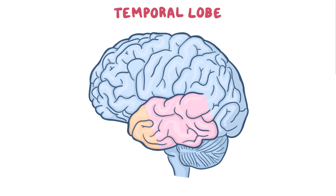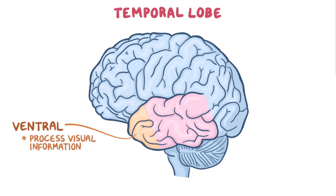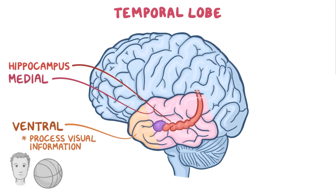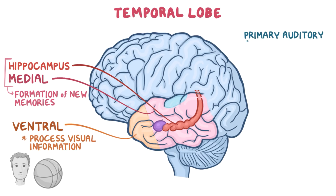The temporal lobe is one of the four major lobes of the brain. It has a variety of functions which are involved in sensory processing. The ventral or anterior part of the temporal lobe helps process visual information, like recognition of objects and faces. The medial or middle portion of the temporal lobe, along with the hippocampus, is responsible for formation of new memories. The temporal lobe also houses the primary auditory cortex, which is needed for speech comprehension.